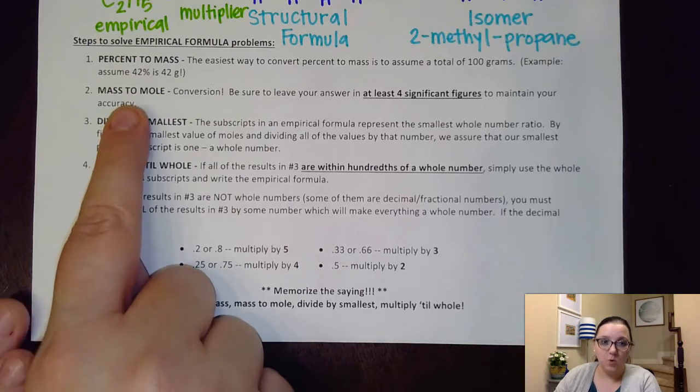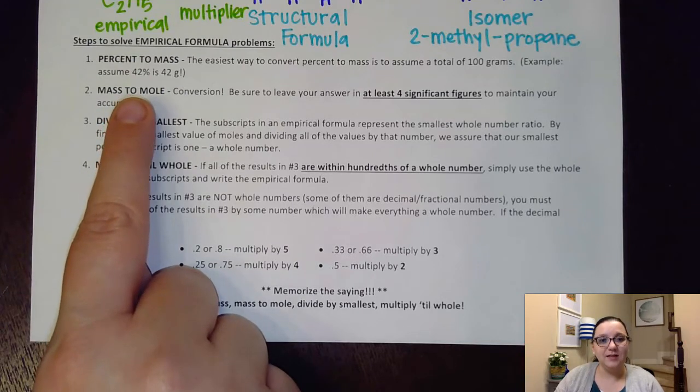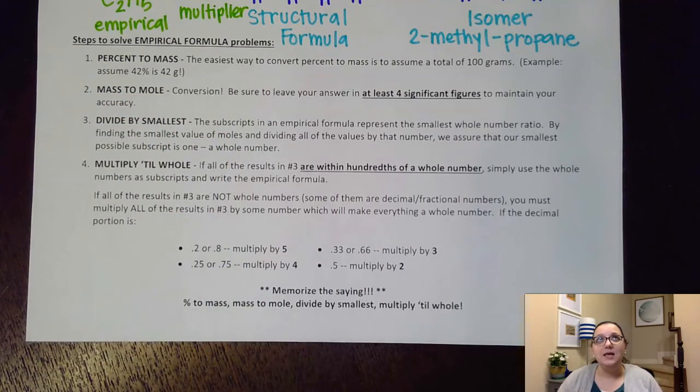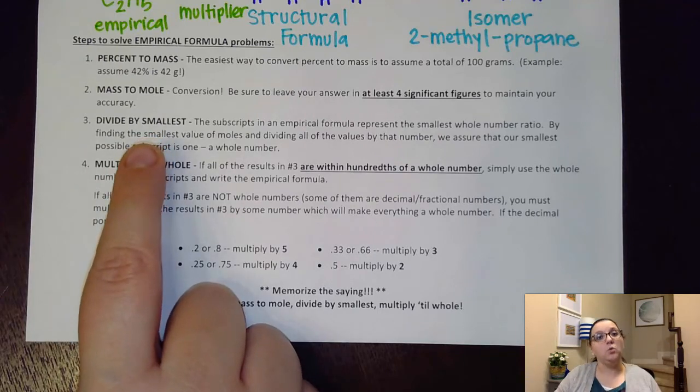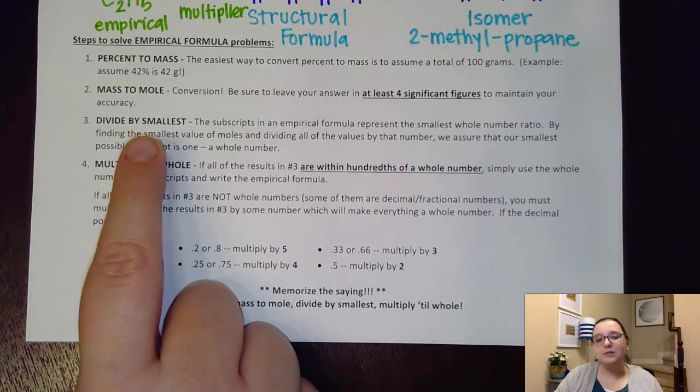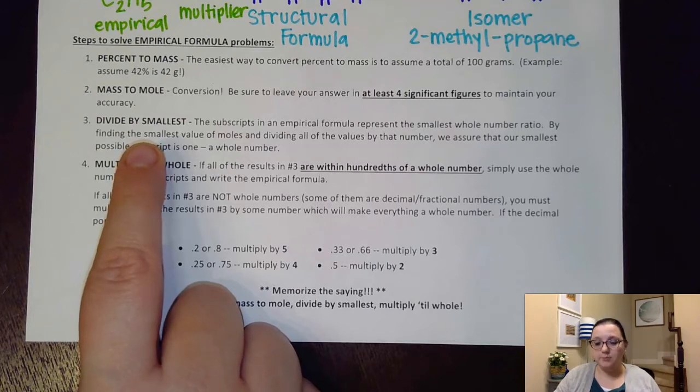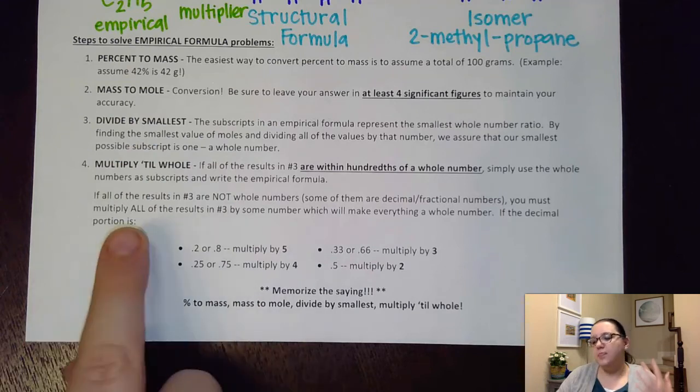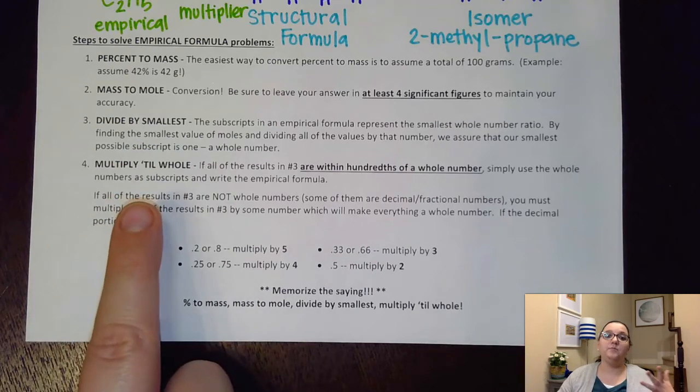Next step, mass to mole. We take each of those masses that we had and do a conversion into moles. Now, what this step will give us is a ratio of one atom to another. The problem is, they're going to be in fractional terms. And so the next step is designed to get us to start working toward whole number subscripts. Dividing by the smallest. So whichever value ends up being the smallest of the moles, we divide all of them by that number. And if at that point we still don't come out to whole numbers, then we can conquer this last step of multiply to whole.